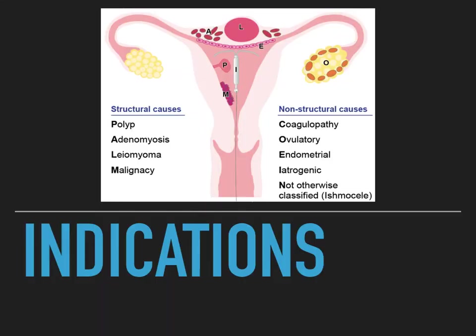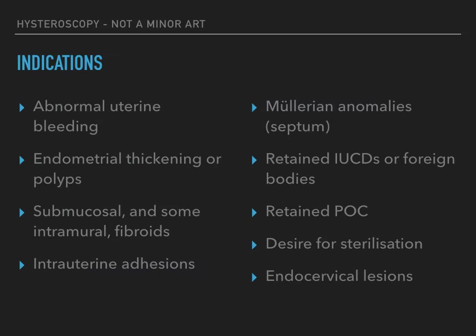So what do we actually use hysteroscopy for? For evaluation or treatment of the endometrial cavity, tubal ostia, or endocervical canal in women with abnormal premenopausal or postmenopausal uterine bleeding, endometrial thickening or polyps, submucosal and some intramural fibroids, intrauterine adhesions, Müllerian anomalies such as uterine septum, retained intrauterine contraceptives or other foreign bodies, retained products of conception, a desire for sterilization, and those with endocervical lesions.